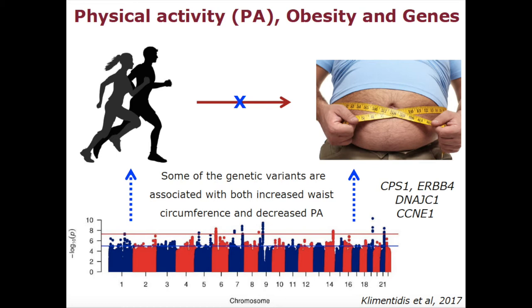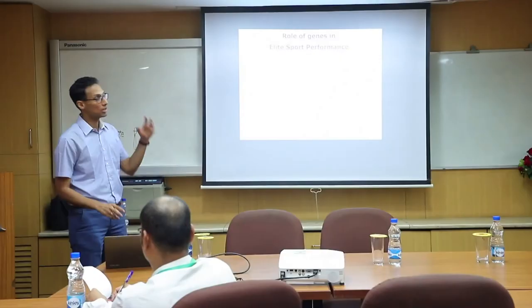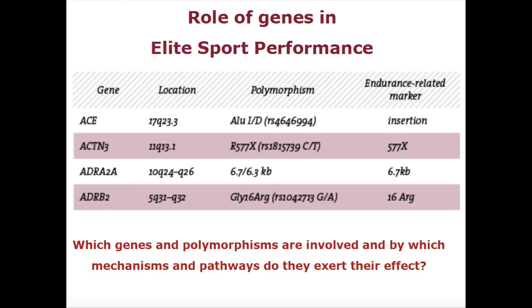They came up with four genes identified by genome-wide association scans. These four genetic variations were found to be associated with increased waist circumference and decreased physical activity. The study was published in 2017. This is a very interesting study which brought a connecting link between physical activity and obesity through the genetic factor.